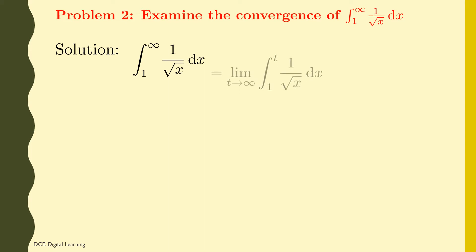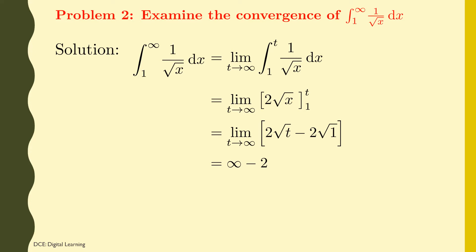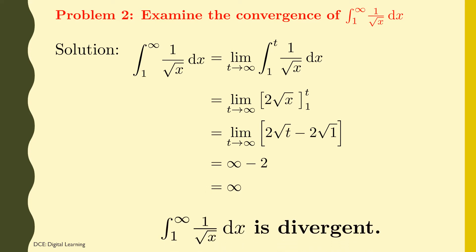So by definition, it is equal to the limit of the integral of 1/√x dx from 1 to t as t tends to infinity. On integration, this equals the limit of 2√x from 1 to t as t tends to infinity. Applying the limits, this equals 2√t minus 2, which equals infinity minus 2, which equals infinity. Therefore, the given integral of 1/√x dx from 1 to infinity is divergent.